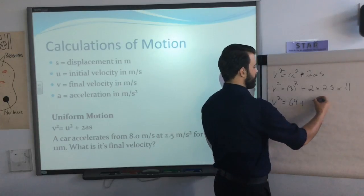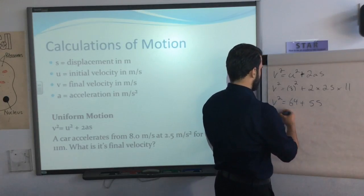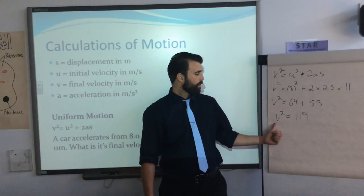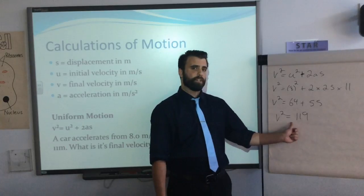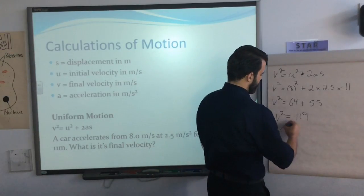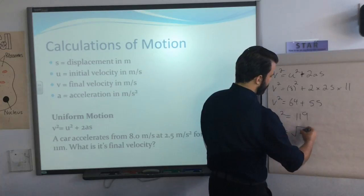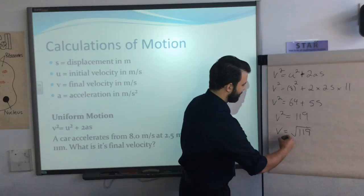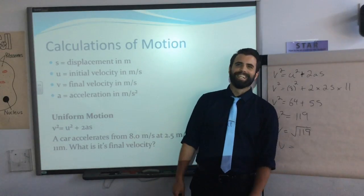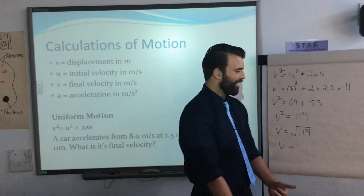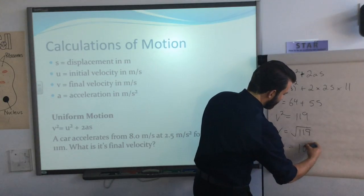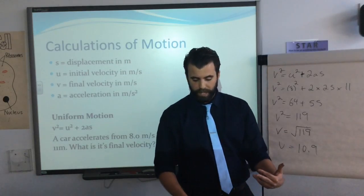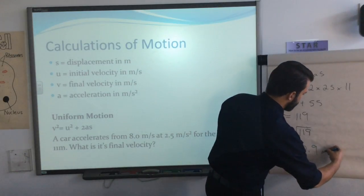Continuing the calculation: v² = 64 + 55 = 119. To find v, we take the square root of 119, which gives approximately 10.9 meters per second. That's the final velocity. So that's how we solve uniform motion problems — identify the known variables, plug them in, find the unknown.